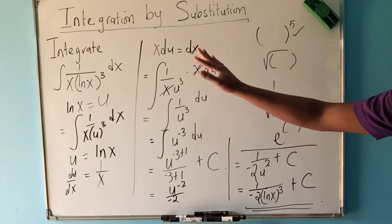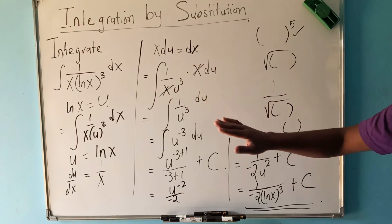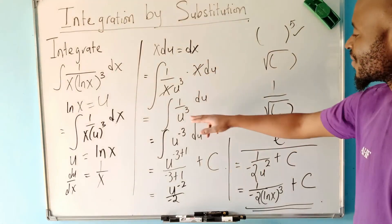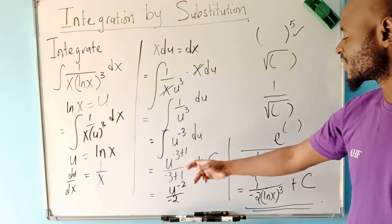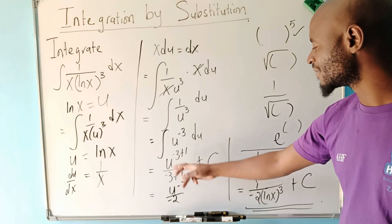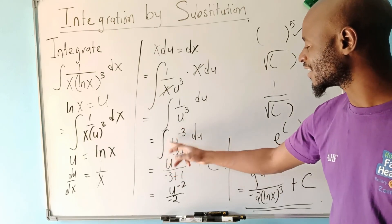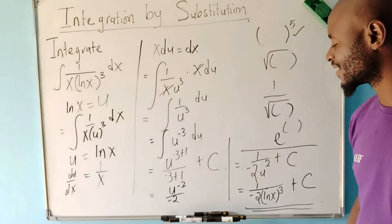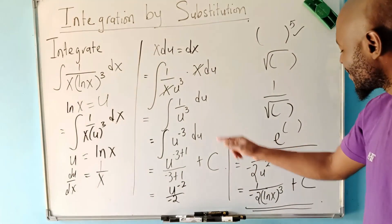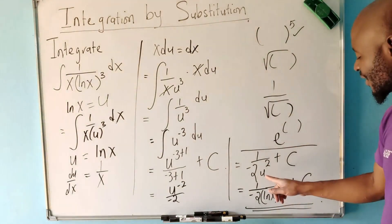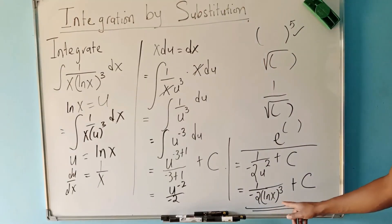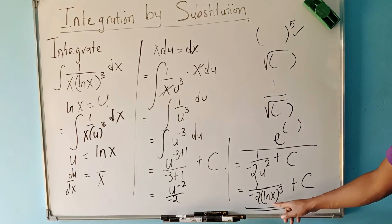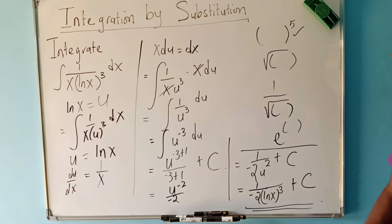In summary, when you are given to integrate something using u-substitution, always make sure you identify the right function to be your u, then manipulate the other expressions containing x so that you end up with a function only in u and du. Then integrate using the power rule. When integrating indefinitely, always include the constant c, and don't forget to substitute back the value of u at the end. Thank you so much for watching.